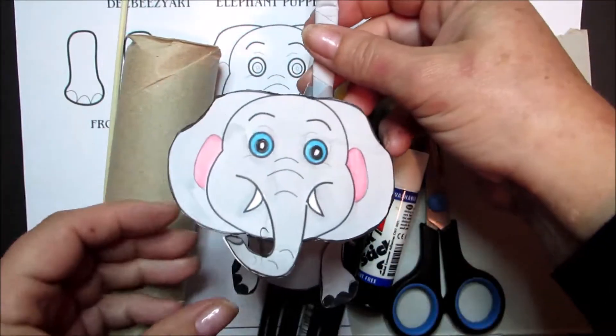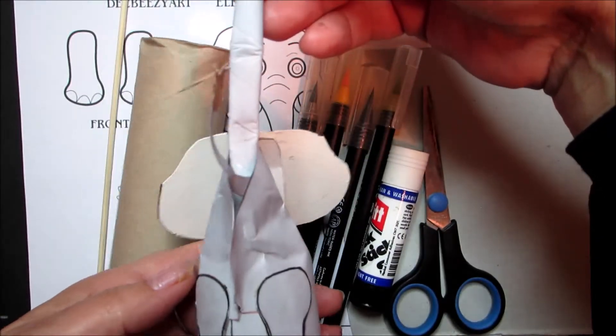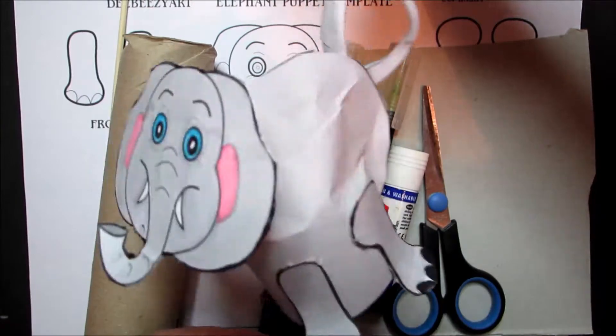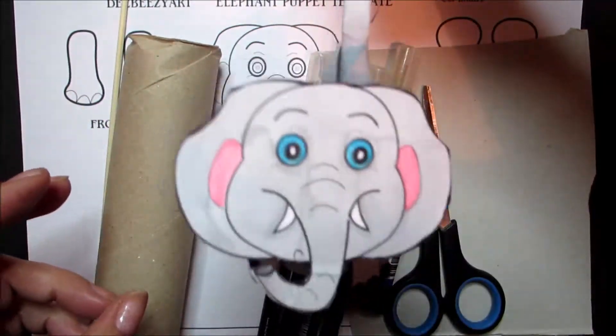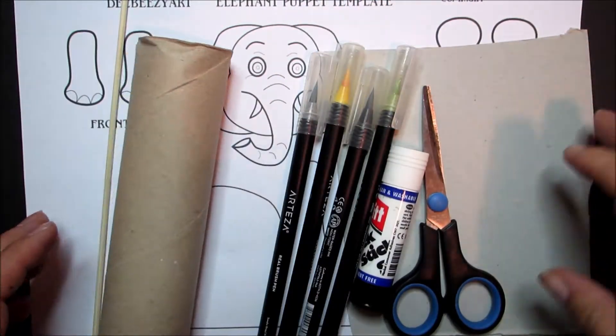Hello everybody, today I'm going to show you how to make this little elephant puppet. As you can see it's very sweet, its head wobbles and moves around so you can have lots of fun making puppet shows with your friends and family.